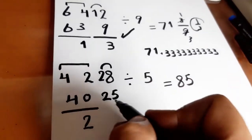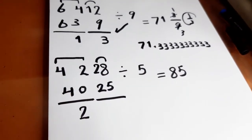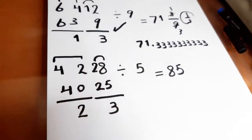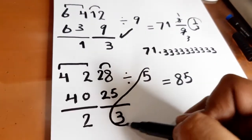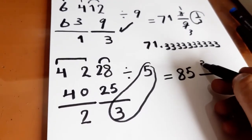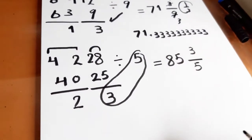Now we will find the difference between 28 and 25. The difference between them is 3. Now we have 3 as a numerator and 5 as a denominator.